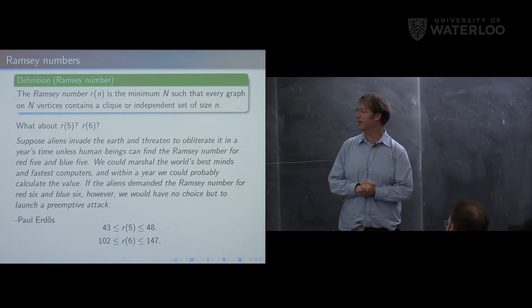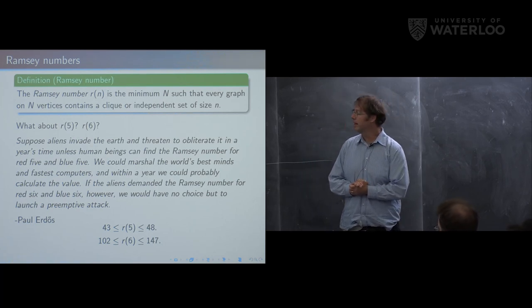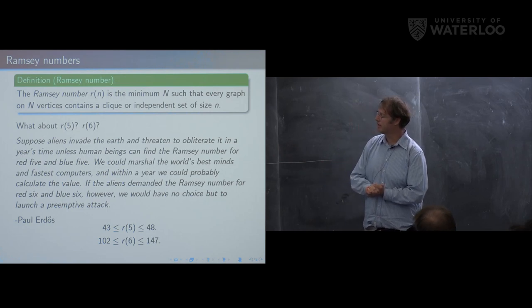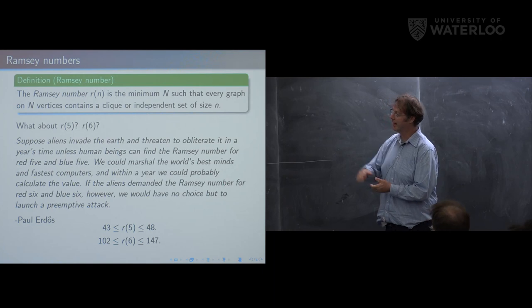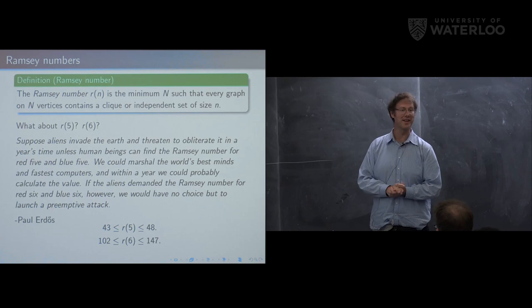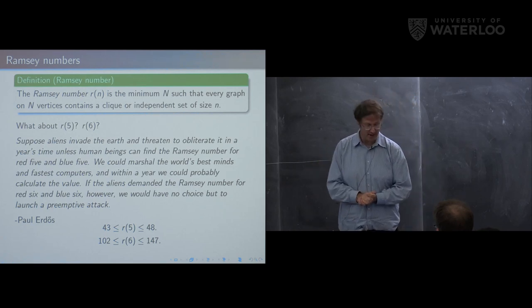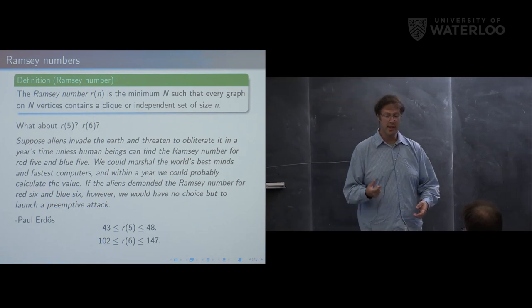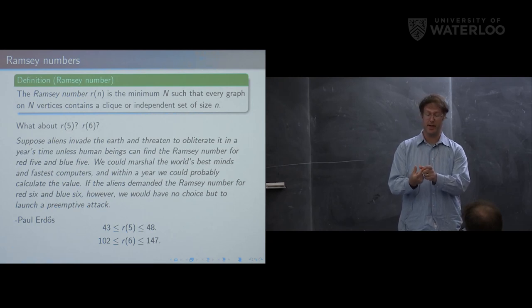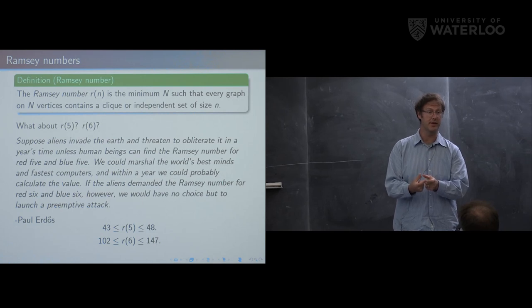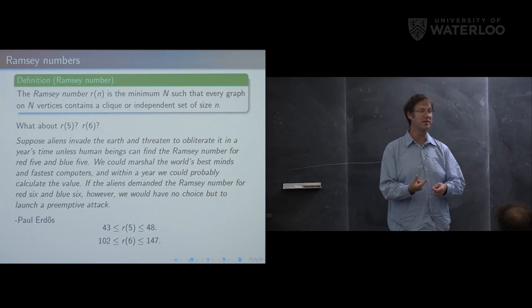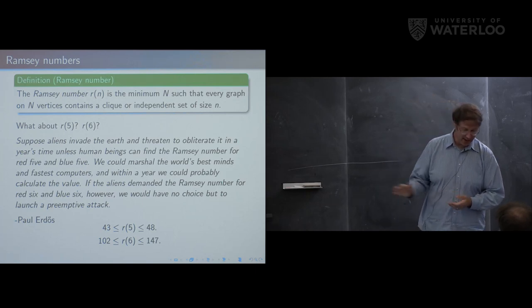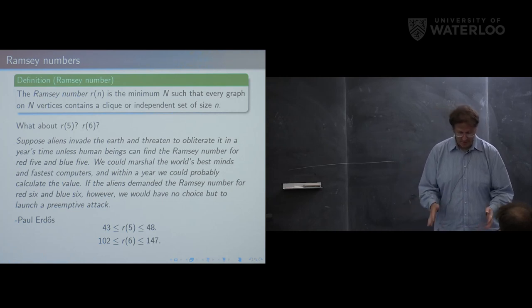The fifth Ramsey number is currently known to be somewhere between 43 and 48, and the sixth is between 102 and 147. The upper bound of 147 was recently announced by Jan Volec in joint work with Sergey Norin and his student Turcot — previously it was 161, and before that 165. To understand why this is hard: checking all labeled graphs on 102 vertices would require examining 2^(102 choose 2), which is bigger than 2^5000 — far too many to enumerate.